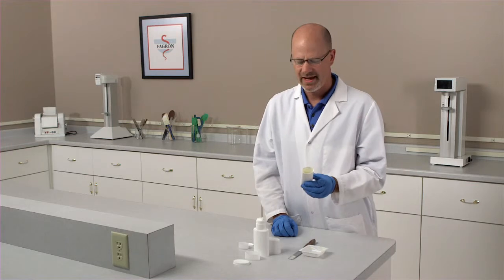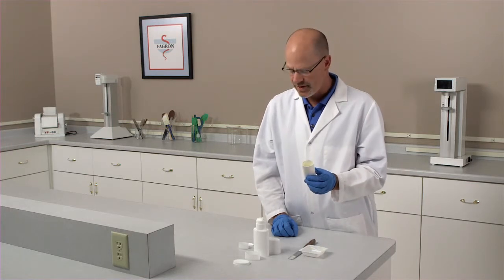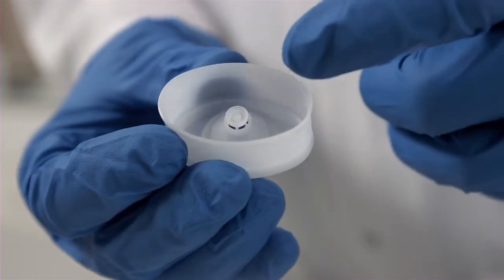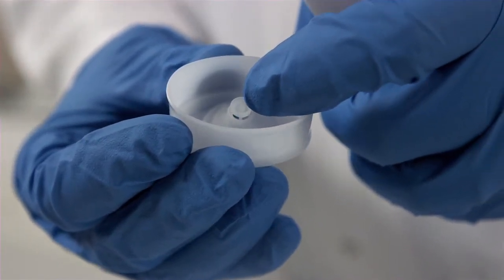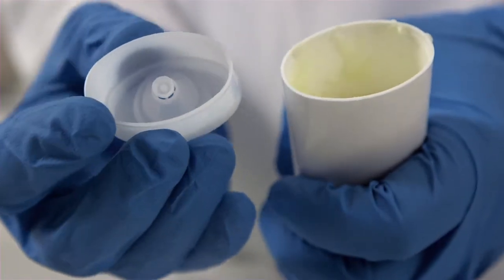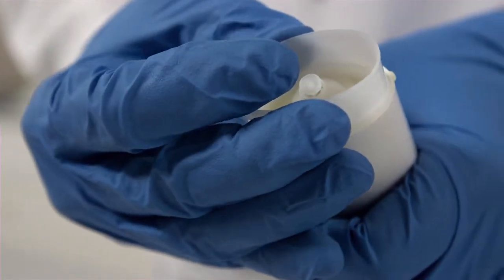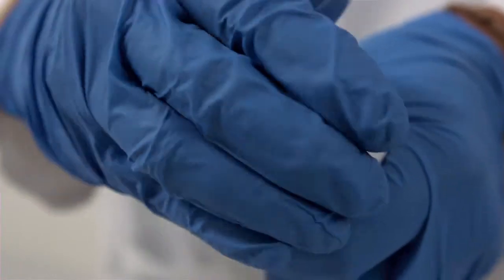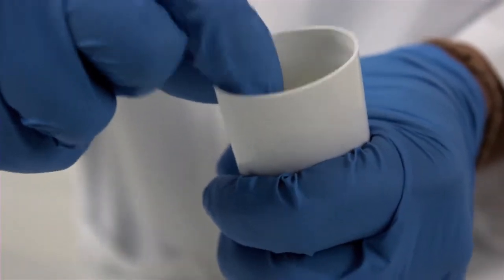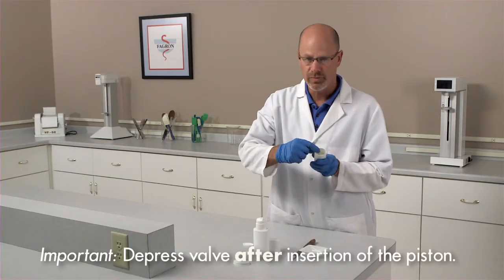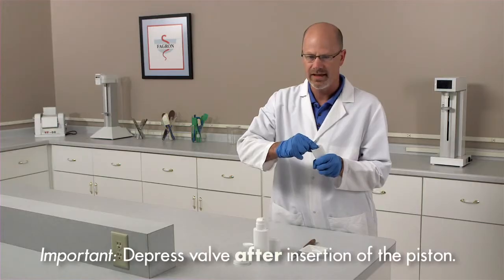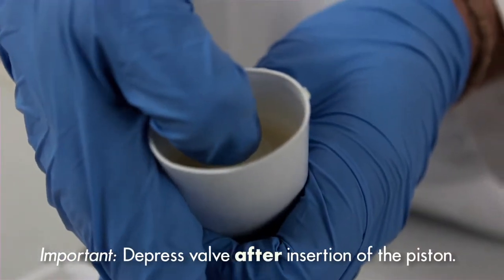Once the cream base has been filled into the dispenser, we can now insert the piston. What's important is this little valve must be plugged in order to pressurize this dispensing system. Simply place the piston with the valve facing you, facing out. There's a little device or plug that needs to be pushed in order to pressurize this system, and all you do is push and snap it in place.